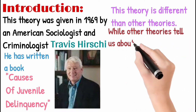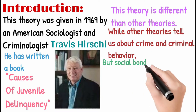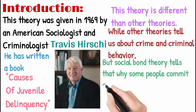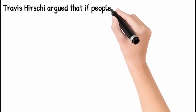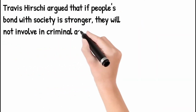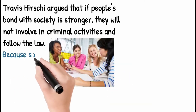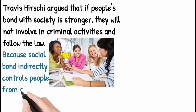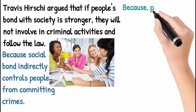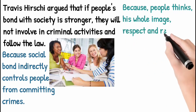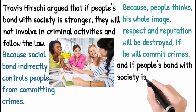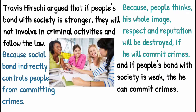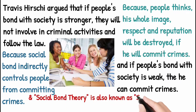This theory is a little different from other theories, because other theories tell us about crime and criminal behavior, whereas Social Bond Theory tells us why some people commit crime and some people do not — and why those who don't commit crime follow the law. Travis Hirschi said that people whose bond with society is strong do not commit crime. Social Bond Theory is also known as Social Control Theory.